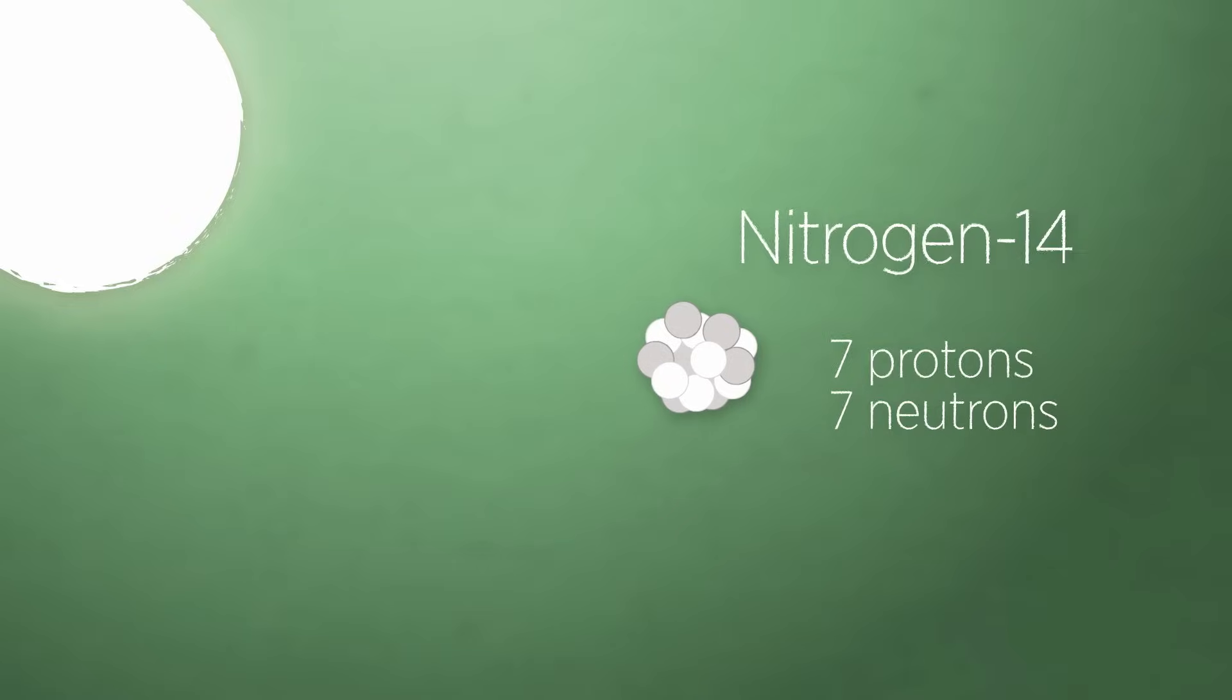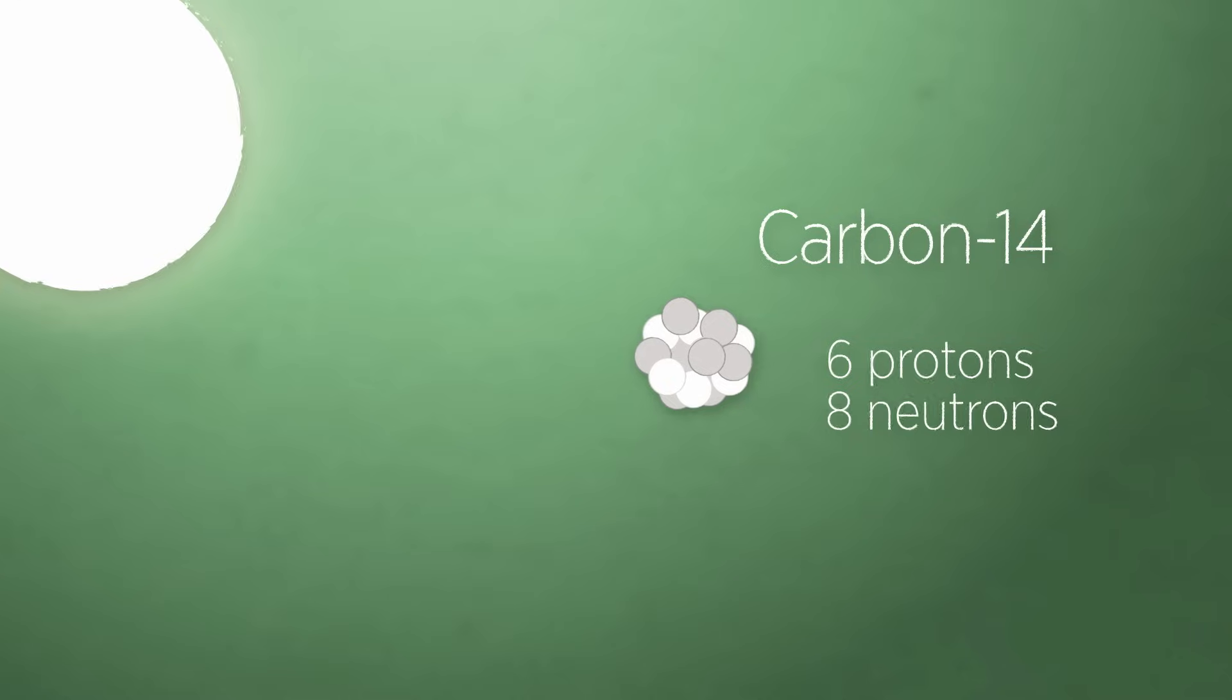And one of the things these cosmic rays do is knock neutrons off of some atoms and protons off of others. And before you know it, the nice stable family man nitrogen-14 atom is all wrapped up and gone crazy and becomes what's known as a carbon-14 atom,